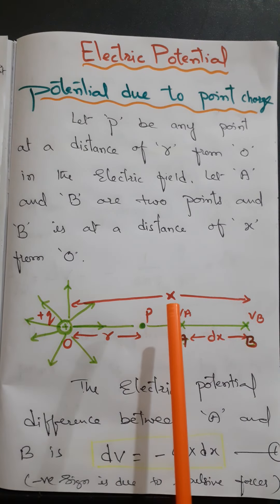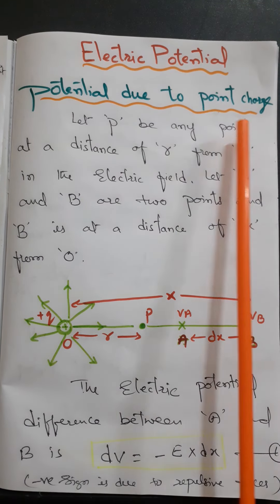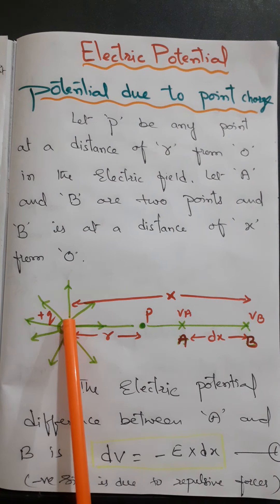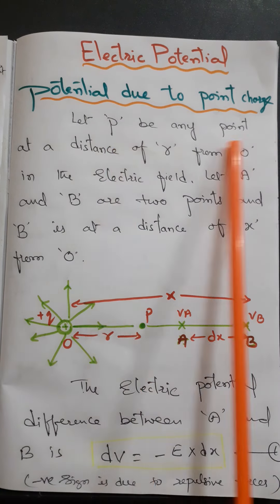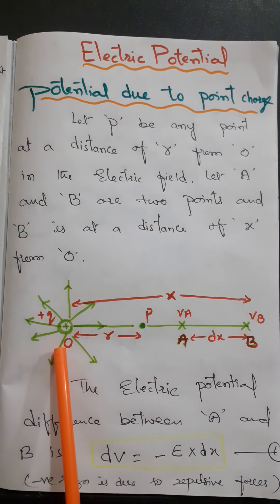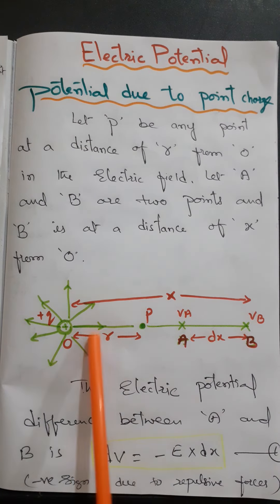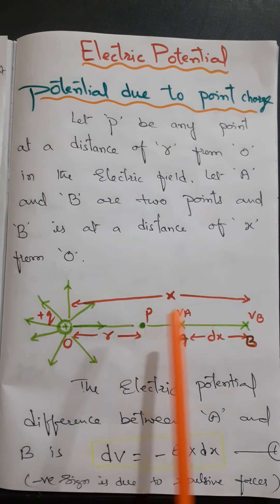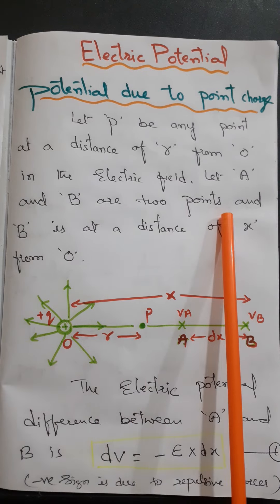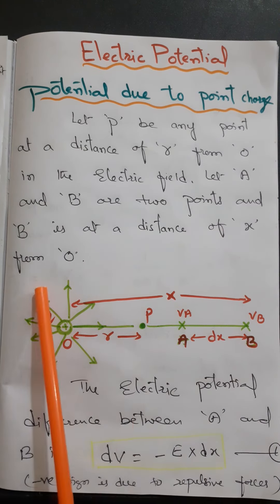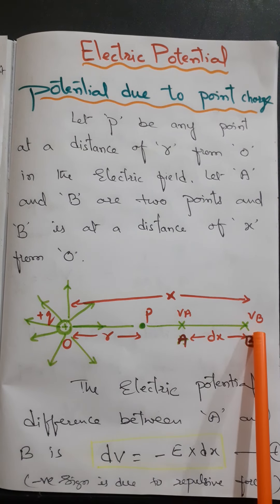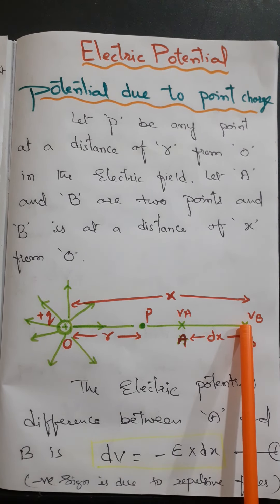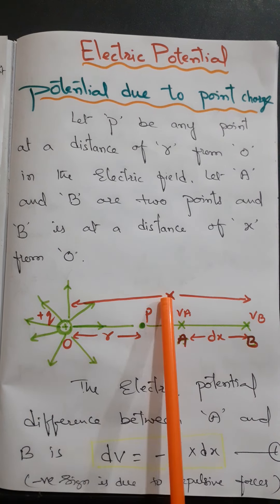Now coming to the main point, that is potential due to point charge. For that, first of all let us consider a point charge plus Q is placed at point O. Let P be any other point which is at a distance of R from O, in the electric field. Let A and B be two points, where B is at a distance of X from O.